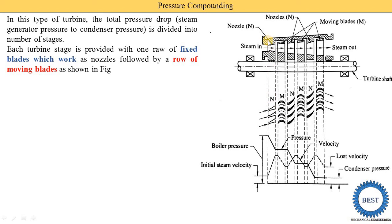Here we draw one additional diagram showing the nozzles, labeled 'N'. The orange portions are the moving blades, labeled 'M'. This last diagram is for pressure and velocity, which will be explained later.